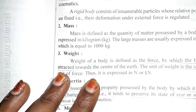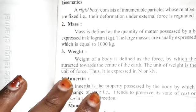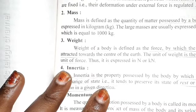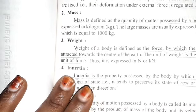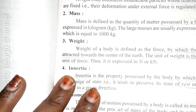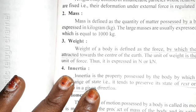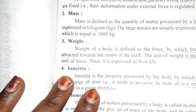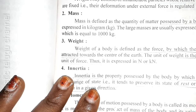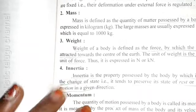Mass is defined as the quantity of matter possessed by a body. Weight of your body is defined as the force by which the body is attracted towards the center of the earth. The unit of weight is same as the unit of force, thus expressed in newtons and kilonewtons.